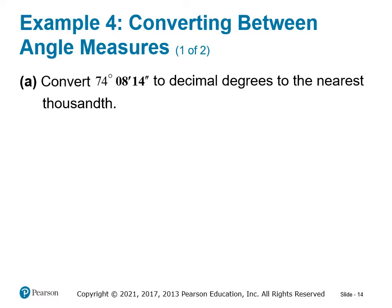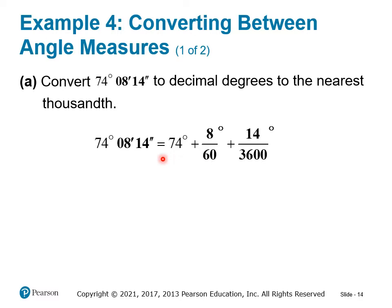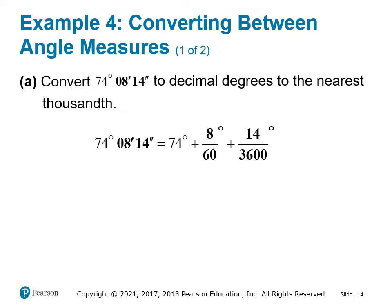We can convert degrees, minutes, and seconds to a decimal degree answer using fractional values. Since 1 minute equals 1/60 of a degree, 8 minutes equals 8/60. Since 1 second equals 1/3600 of a degree, 14 seconds equals 14/3600. So the expression is 74 plus 8/60 plus 14/3600, which your calculator evaluates correctly using order of operations, giving 74.137 degrees.